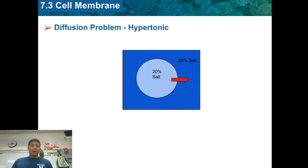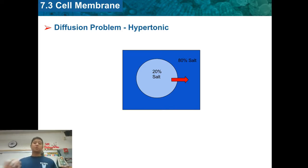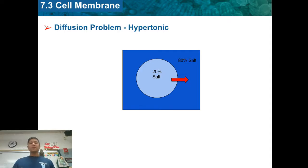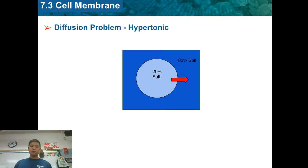Let's take a look at another problem. This time, there's more salt outside the cell than inside the cell. Water is going to go wherever there is more salt, so the water is going to leave the cell and the cell is going to shrink in size. We call this a hypertonic solution — that's what happens when you get thirsty.